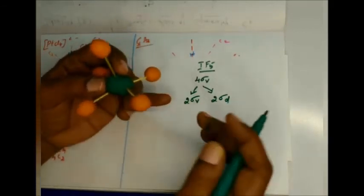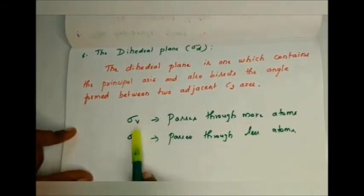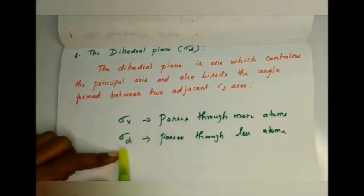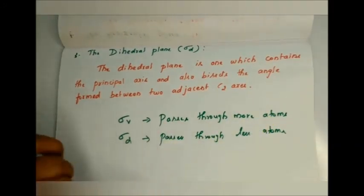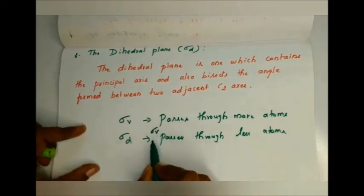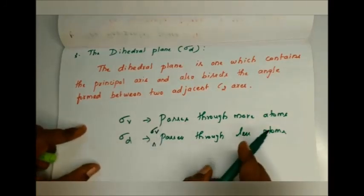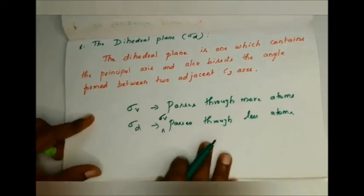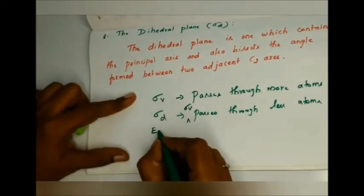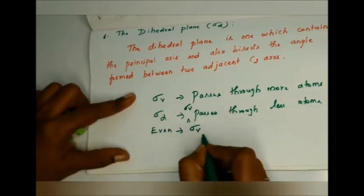For IF5: sigma v passes through more atoms, sigma d passes through less atoms along the vertical plane. When there is an even number of sigma v planes, half are sigma v and half are sigma d. Here we have 4 sigma v and 2 sigma d.